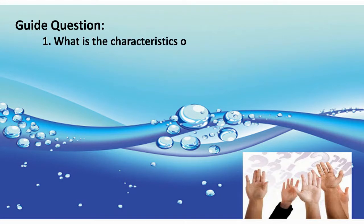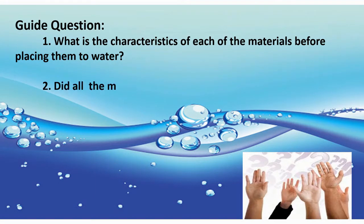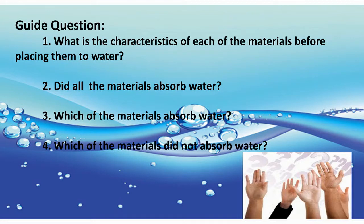Number one: What is the characteristics of each of the materials before placing them to water? We will observe carefully the characteristics of each material before placing them in water. Number two: Did all the materials absorb water? Number three: Which of the materials absorb water? Number four: Which of the materials did not absorb water? These are the questions that will guide us while doing the experiment, and we will answer them afterwards.